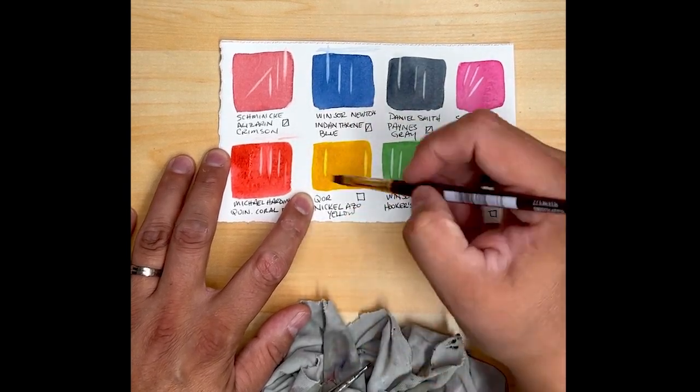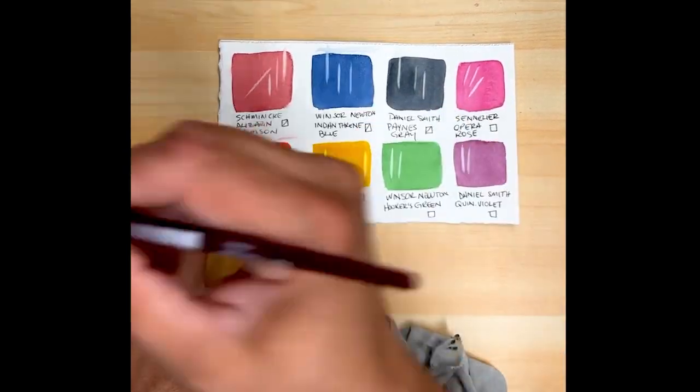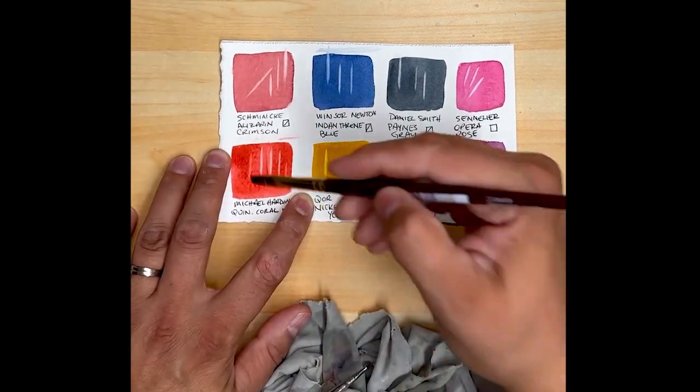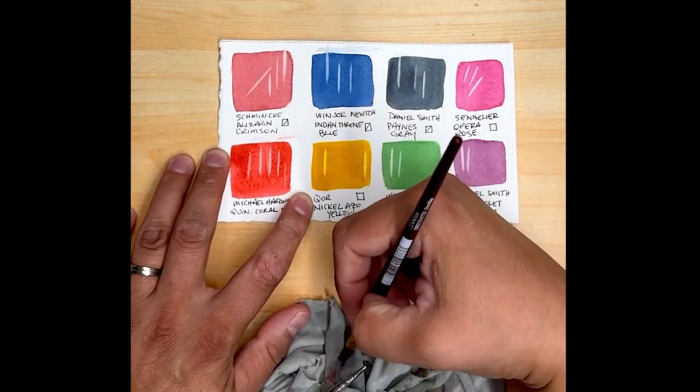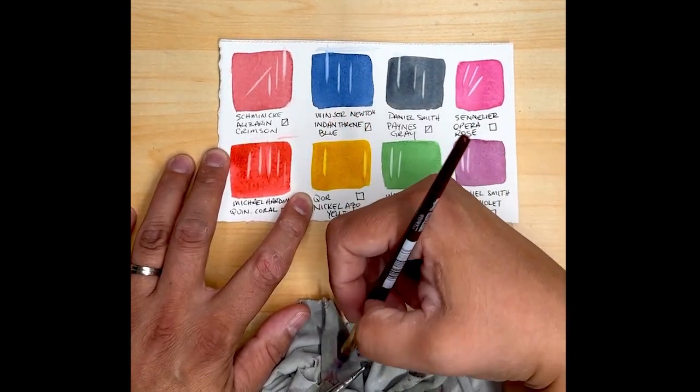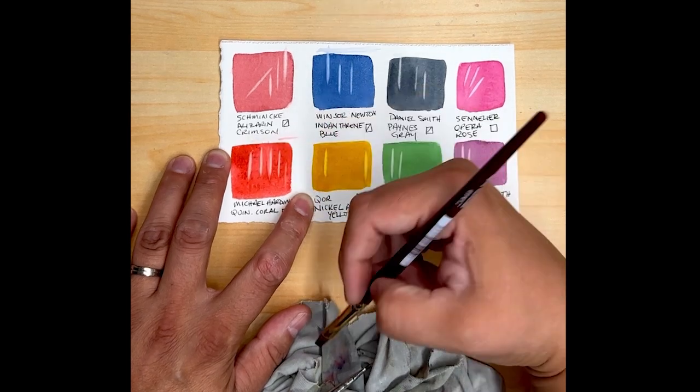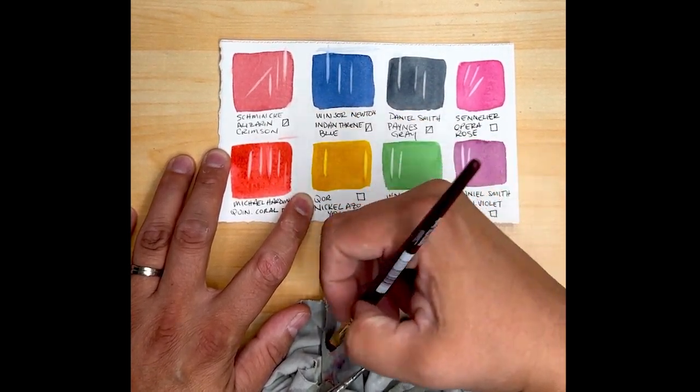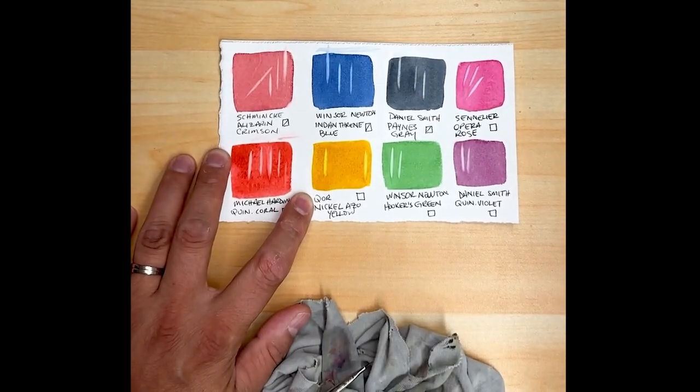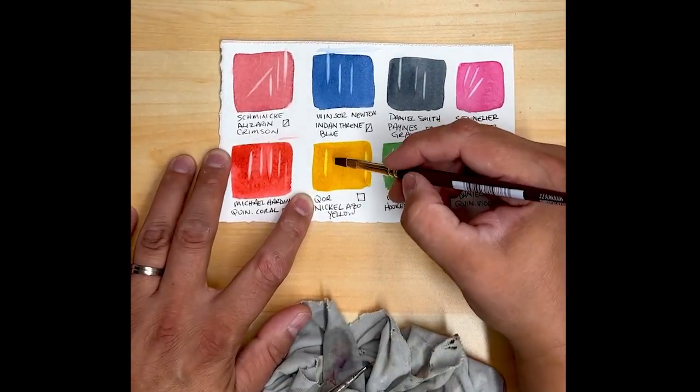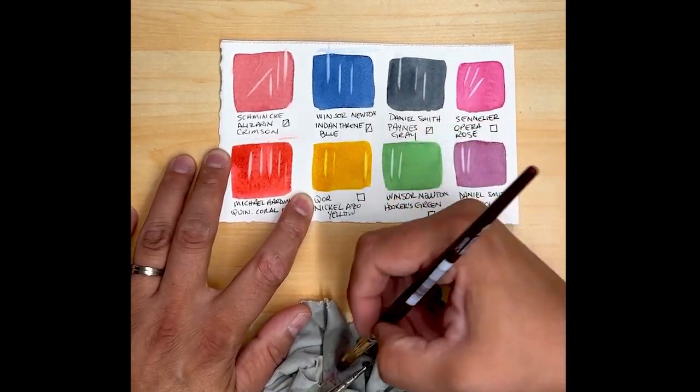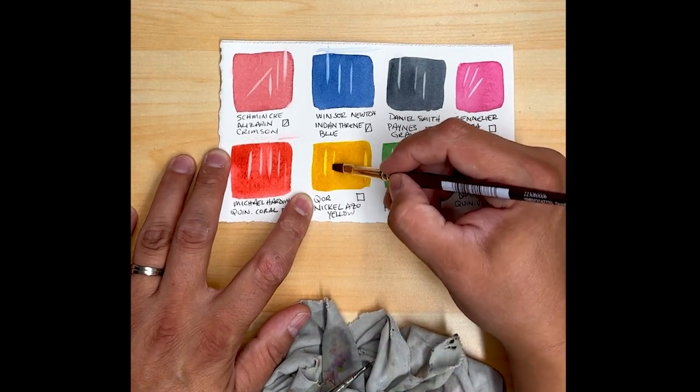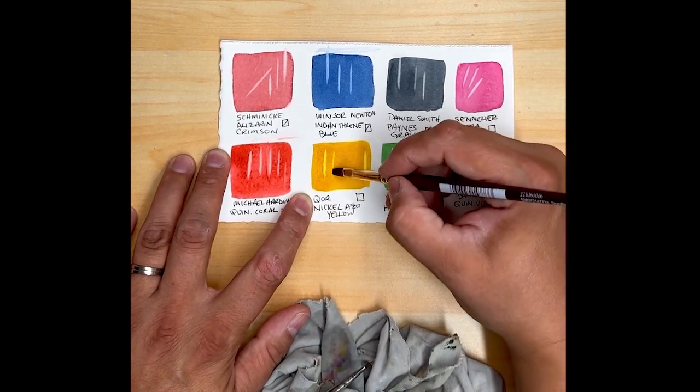This color here, these next two colors are notoriously staining. This is Michael Harding Quinacridone Coral. It's very staining and actually quite hard to lift. It doesn't mean you can't - you just have to work at it a little bit more, which means you might not get as pinpoint accuracy with it. And then this is Cor Nicol Azo Yellow, which is again very staining.